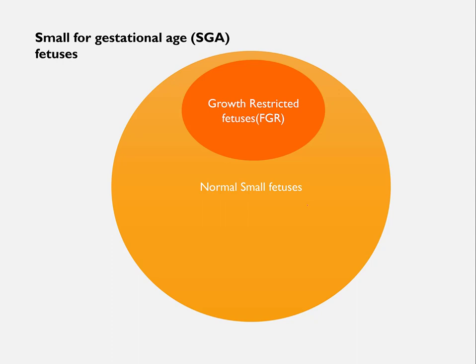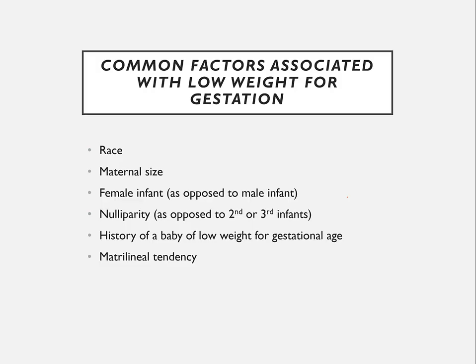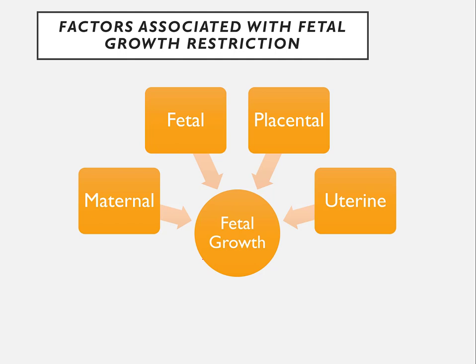If you take the total set of all small for gestational age babies, only a small subset will be growth-restricted or FGR babies; the others are normal constitutionally small babies. Common factors affecting birth weight or size include race, maternal size, female sex, nulliparity (second or third babies are generally larger than the first), previous history of low birth weight baby, and maternal tendency to deliver small babies.